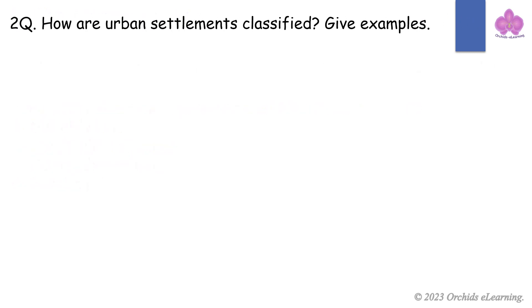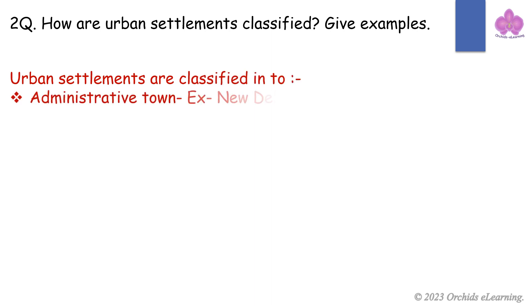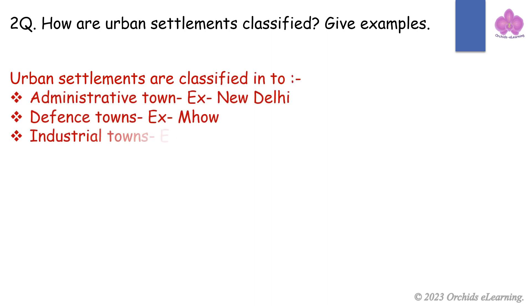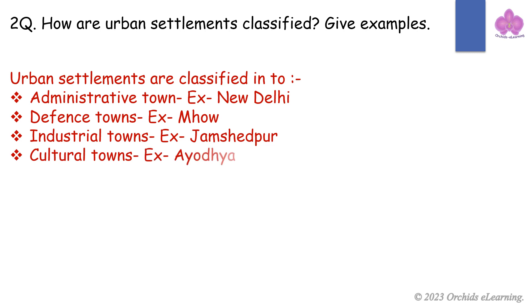How are urban settlements classified? Give examples. Urban settlements are classified into administrative towns — example: New Delhi; defense towns — example: Mao; industrial towns — example: Jamshedpur; cultural towns — example: Ayodhya.